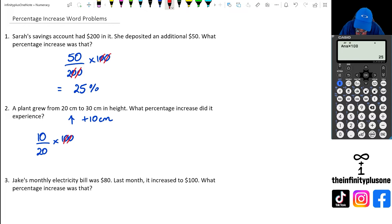If you look at it in this case, it actually grew by plus 10 centimeters. So if we were to do 10 out of 20, and then we multiply it by 100, we're going to end up with 50% increase.